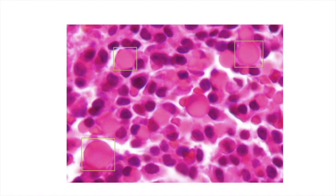Now let's focus on other microscopic features you can come across in a slide rich in plasma cells. First are Russell bodies, which are eosinophilic, large, homogeneous, immunoglobulin-containing inclusions usually found in a plasma cell undergoing excessive synthesis of immunoglobulin. Russell bodies are characteristic of distended endoplasmic reticulum — the excess immunoglobulin builds up and forms intracytoplasmic globules, thought to be a result of insufficient protein transport within the cell.